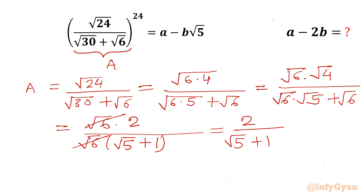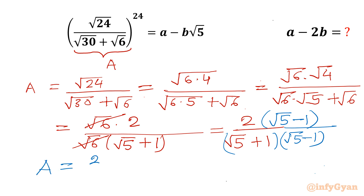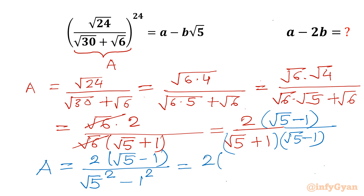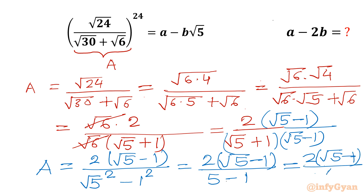Now I will rationalize the numerator and denominator. I will multiply by (root 5 minus 1) on both top and bottom. So it will become a equal to 2 times (root 5 minus 1), and in the denominator it is (a+b)(a-b) = a squared minus b squared. So we can write root 5 squared minus 1 squared, which gives 5 minus 1 equals 4. So a equals 2 times (root 5 minus 1) divided by 4. We can cancel 2 and 4, so our base a comes out to be (root 5 minus 1) over 2.